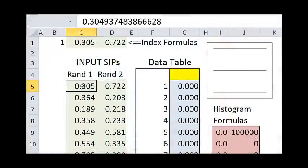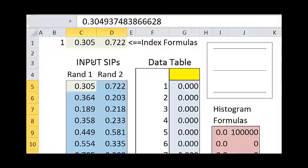These two columns contain SIPs, generated with a RAND formula and then frozen in place numerically.